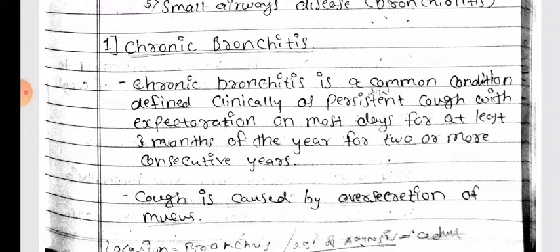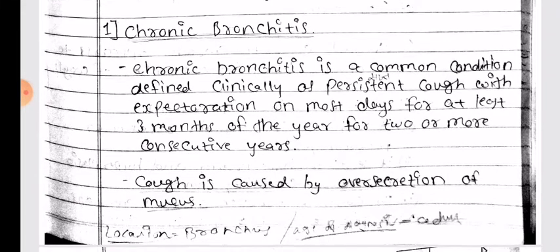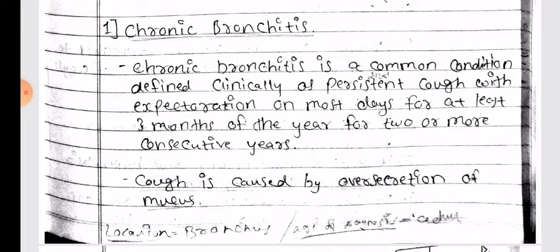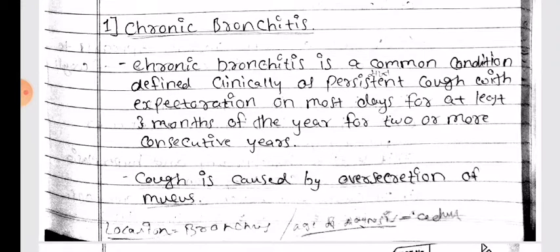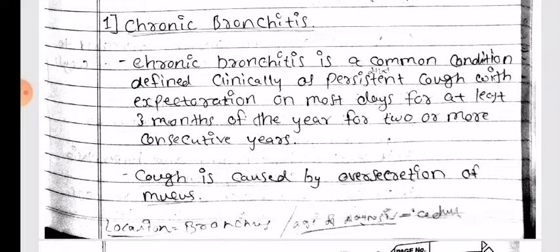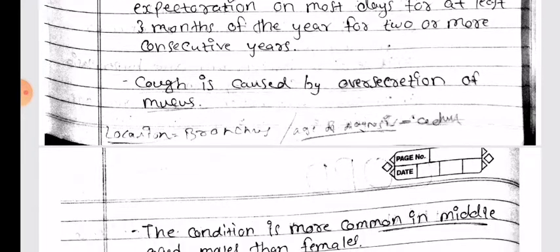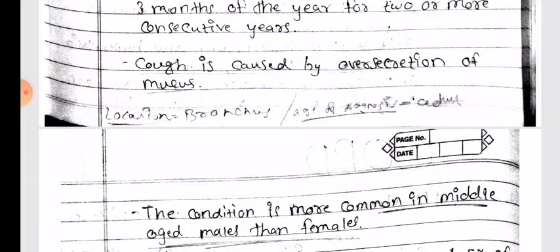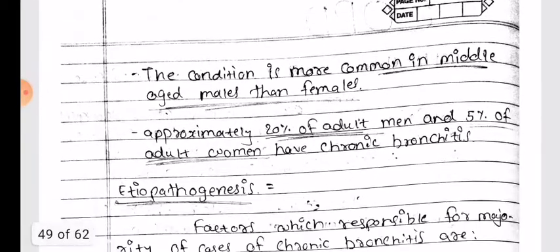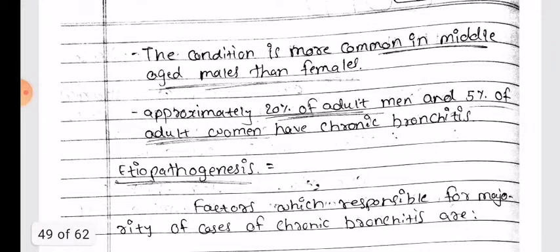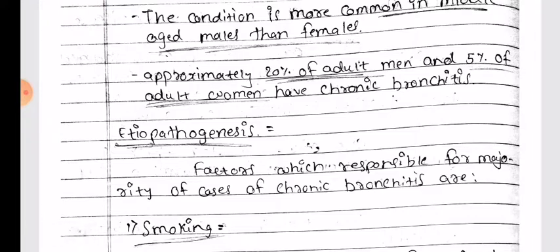Chronic bronchitis is a common condition defined clinically as persistent cough with expectoration on most days for at least 3 months of the year for 2 or more consecutive years. Cough is caused by over-secretion of mucus. Location: bronchus. Age of diagnosis: adults. The condition is more common in middle-aged males. Approximately 20% of adult men and 5% of adult women have chronic bronchitis.